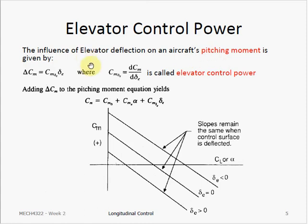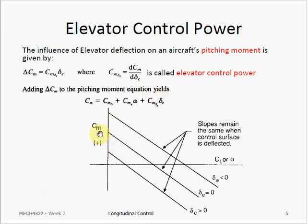We call the elevator control power Cm_delta_e. It is the contribution from the elevator deflection toward our pitching moment coefficient. The larger the value of Cm_delta_e, the more effective the elevator is in creating a moment. In the pitching moment coefficient equation derived previously, we can add the term for the change in pitching moment caused by elevator deflection. If you plot the Cm versus alpha graph, the elevator deflection shifts the Cm-alpha curve, but the slope of these graphs does not change.